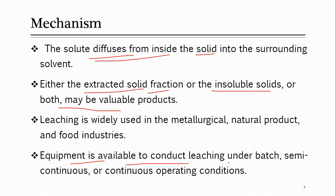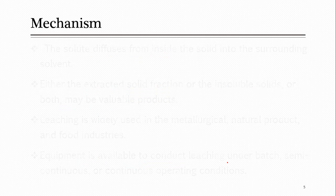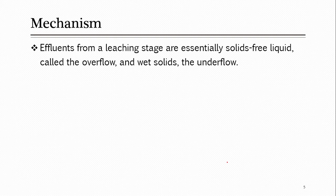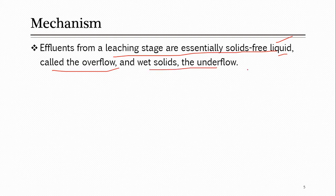Equipment for leaching can be batch, semi-continuous, or continuous, depending on the application. Effluents from a leaching stage are essentially a solid-free liquid. After leaching, what you get is a liquid that does not contain solid but contains dissolved portions of the solid. This is called the overflow — the top layer separated after extraction, which is the liquid containing soluble parts of the solid.